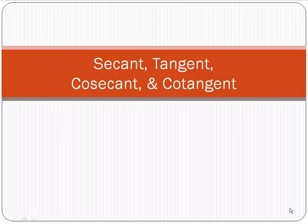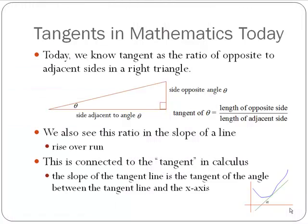This is Dusty Jones here to talk about some other trigonometric functions: secant, tangent, cosecant, and cotangent. First I want to start off with tangent and talk about its use in mathematics today. We know the tangent as the ratio of opposite to adjacent sides in a right triangle — the TOA in SOH-CAH-TOA. So if we have a right triangle with angle theta, the tangent of theta is the length of the opposite side divided by the length of the adjacent side.